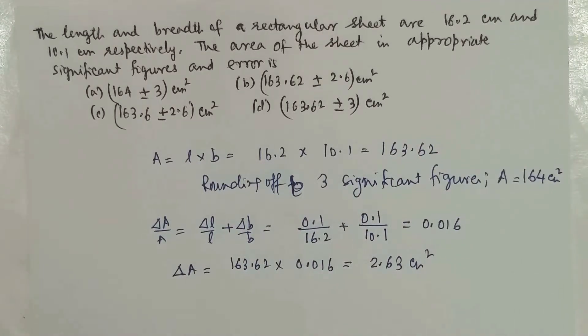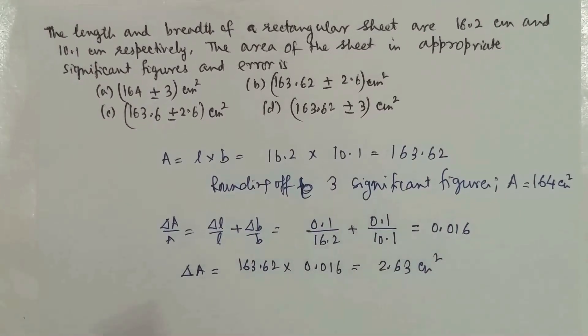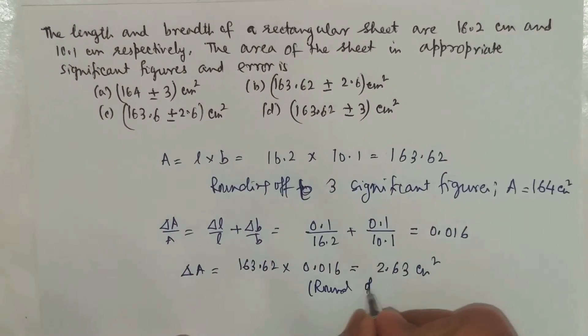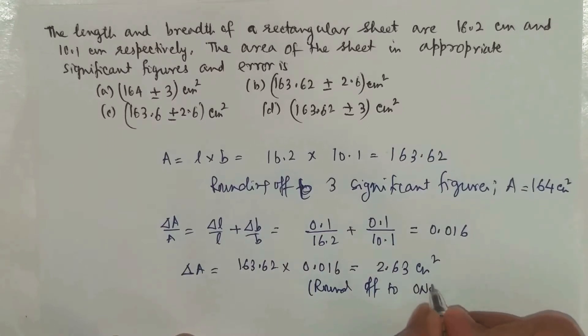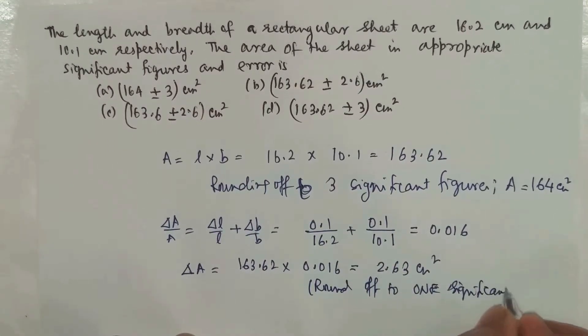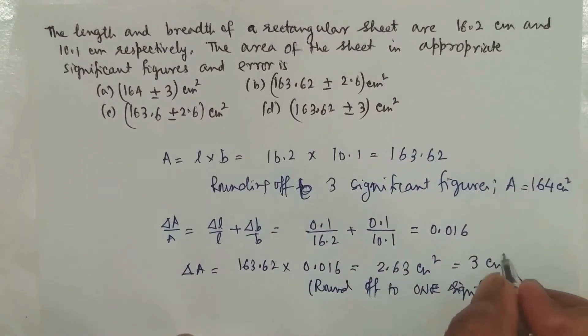We need to round it off to one significant figure. Why one significant figure? Because the error is 0.1, which has only one significant figure. So we round off to only one significant figure, which should be 3 cm².